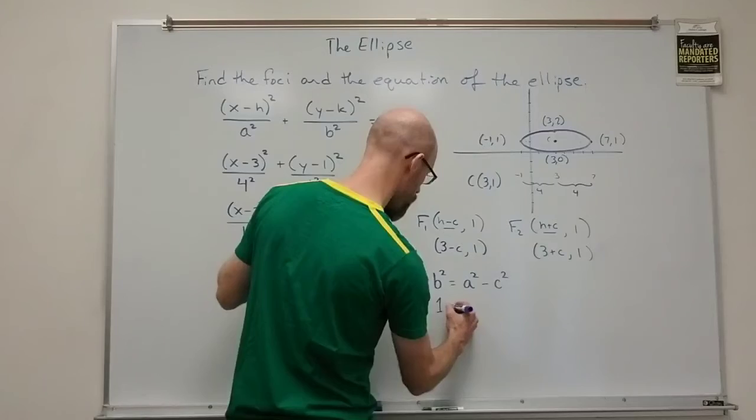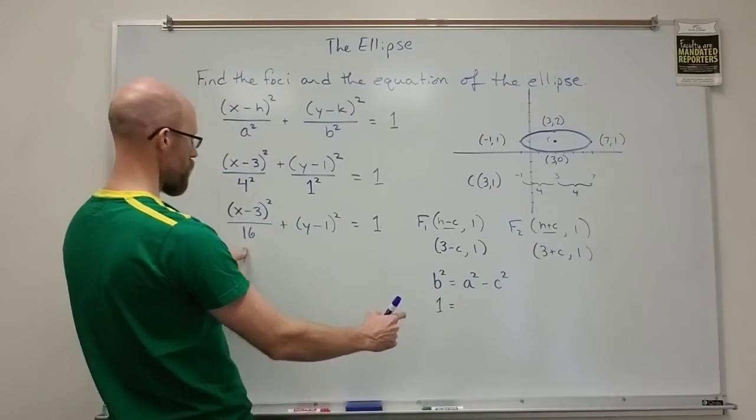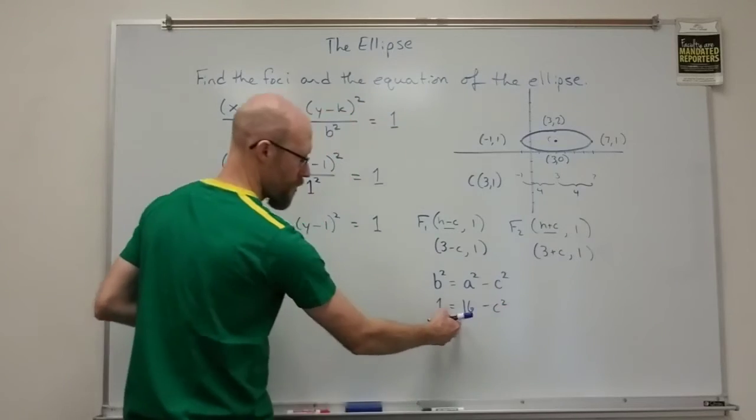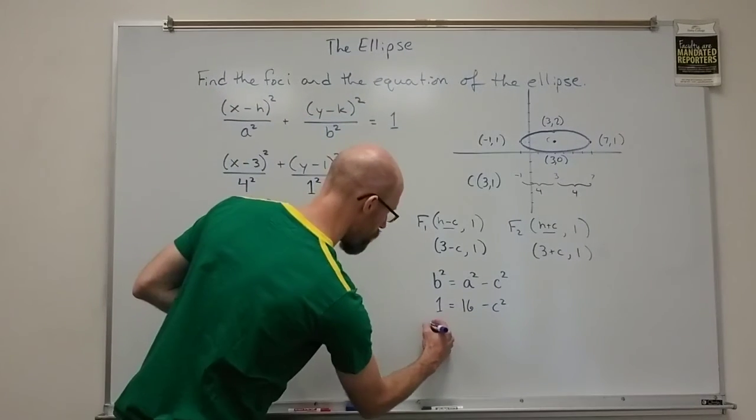So that's 1 squared. The a value is 4. So that's 16 which is 4 squared. I subtract the 16. I get negative 15.